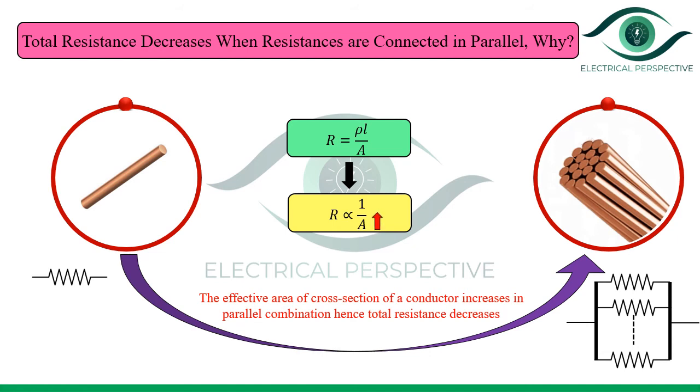As the effective cross-sectional area increases, what about the resistance? It decreases because R is inversely proportional to cross-sectional area. This is the reason why, when resistances are connected in parallel, the equivalent resistance decreases: because in parallel connection, the effective cross-sectional area increases.